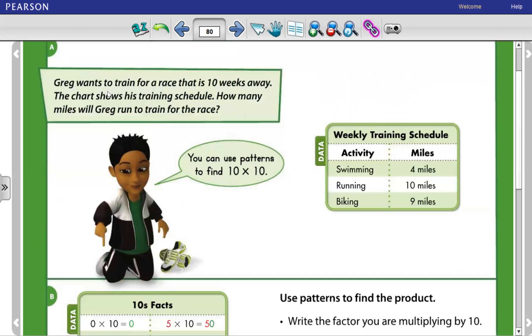Greg wants to train for a race that is 10 weeks away. The chart shows his training schedule. How many miles will Greg run to train for the race? You can use patterns to find 10 times 10.